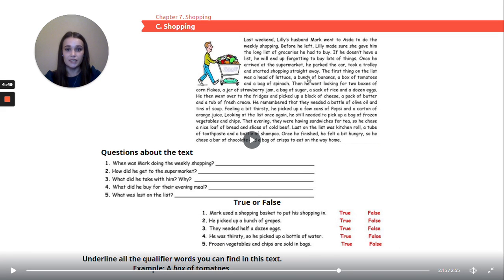The first thing on the list was a head of lettuce, a bunch of bananas, a box of tomatoes, and a bag of spinach. Then he went looking for two boxes of cornflakes, a jar of strawberry jam, a bag of sugar, a sack of rice, and a dozen eggs. He then went over to the fridges and picked up a block of cheese, a pack of butter, and a tub of fresh cream.